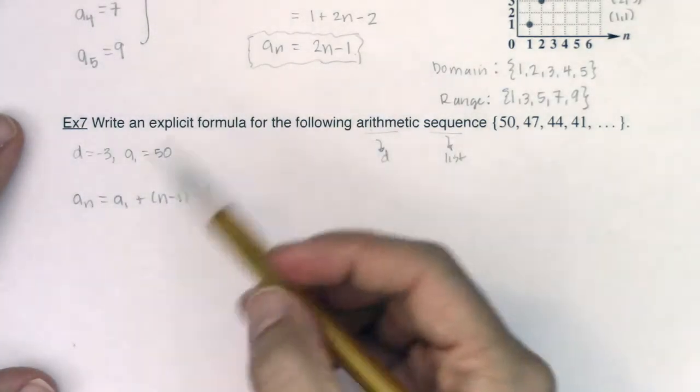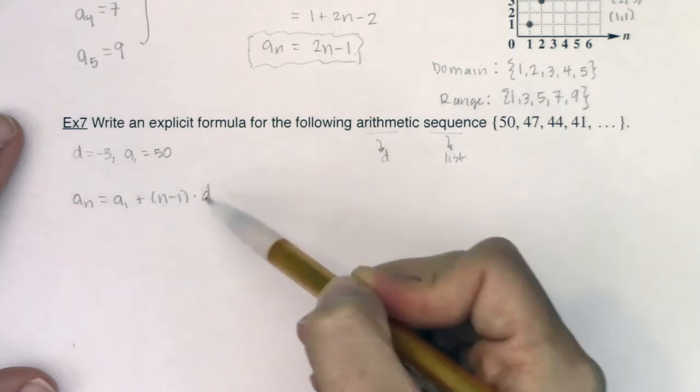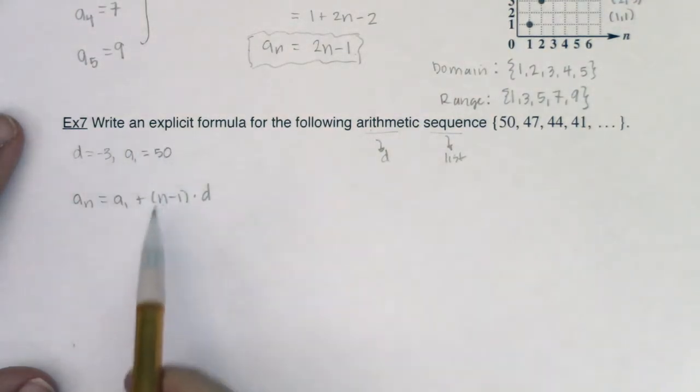And this formula has four variables, the a sub nth term, the a sub 1th term, right, the first term, n itself, and then D. And I already have the two critical pieces. I have a sub 1 and I have D.